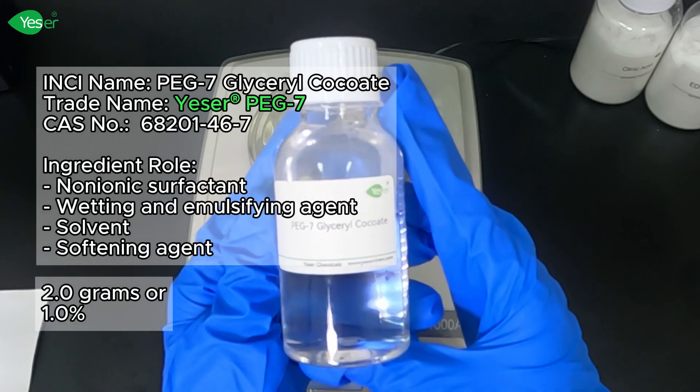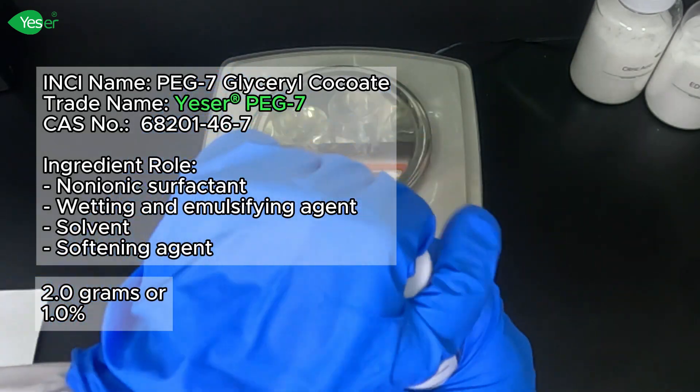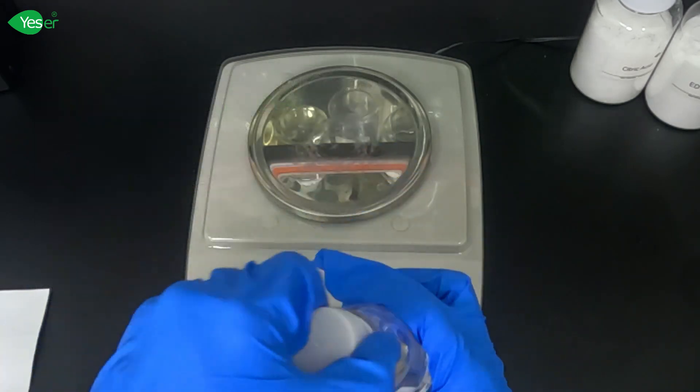Let's add our PEG-7 glycerol cocoate. Let's add about 2 grams of this, or 1% for our formulation.